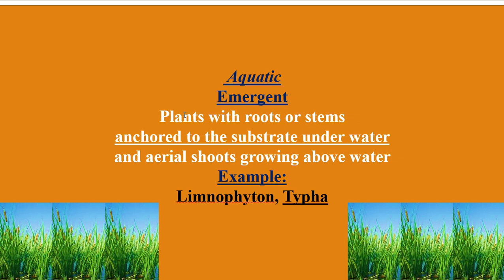Emergent plants are plants which have anchored roots or stems to the substrate of water bodies — meaning the root or stem portion holds tightly to the mud or soil found under water bodies like ponds. The remaining aerial portion, that is the shoot system, grows above the water bodies. This plant shown is Typha, which is the emergent type of aquatic plant.